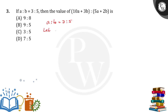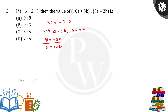So let a is equal to 3k and b is equal to 5k. And we are going to find 10a plus 3b by 5a plus 2b.